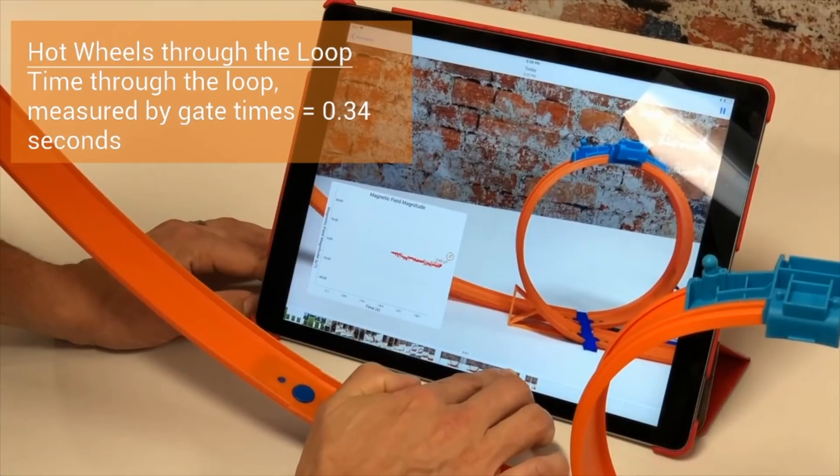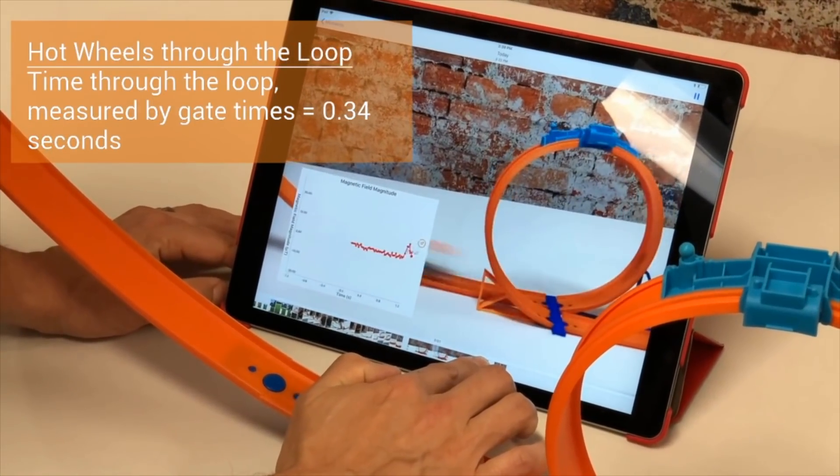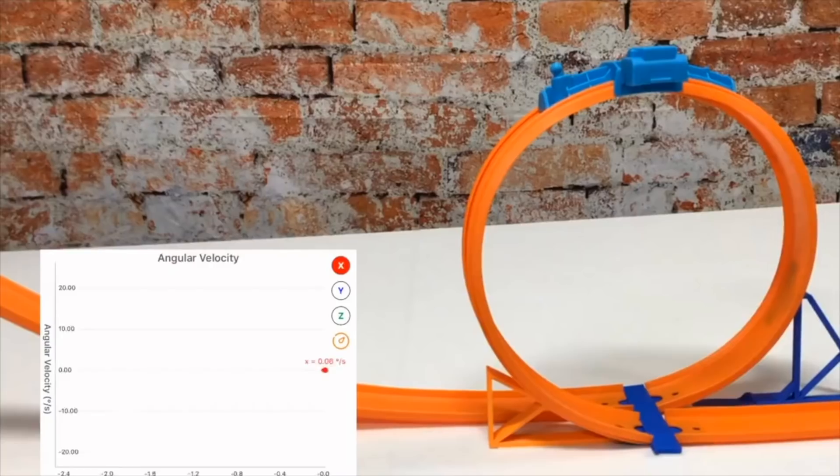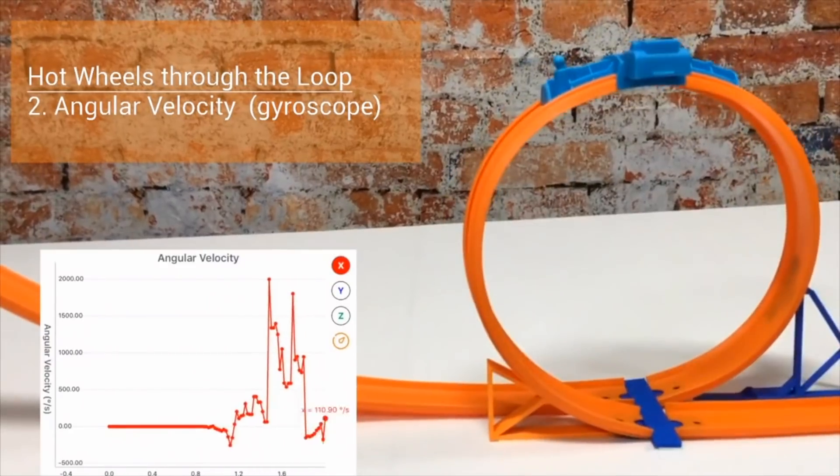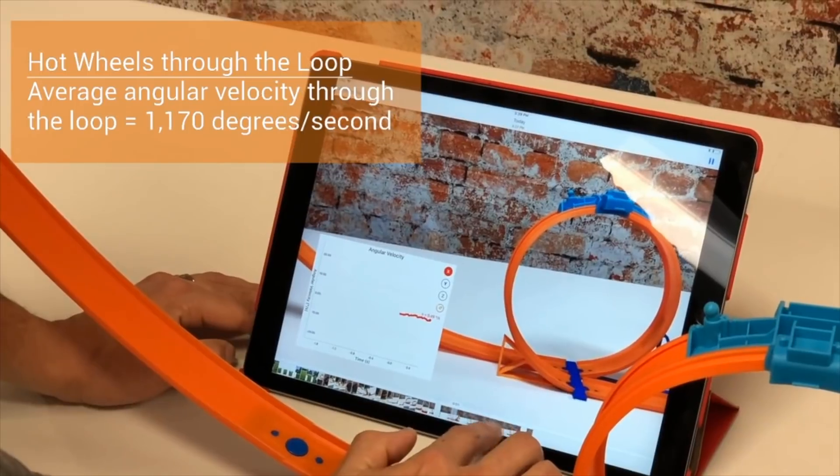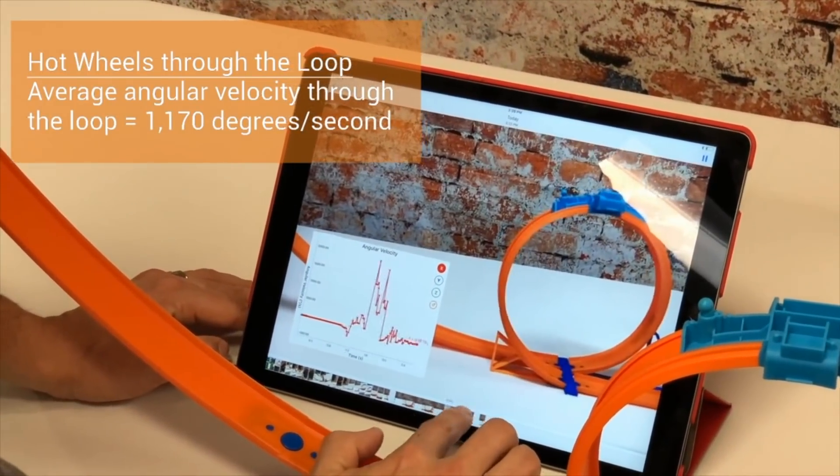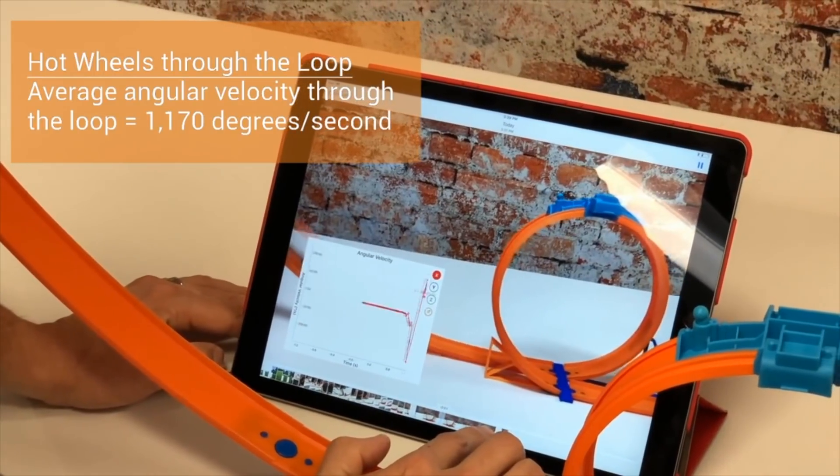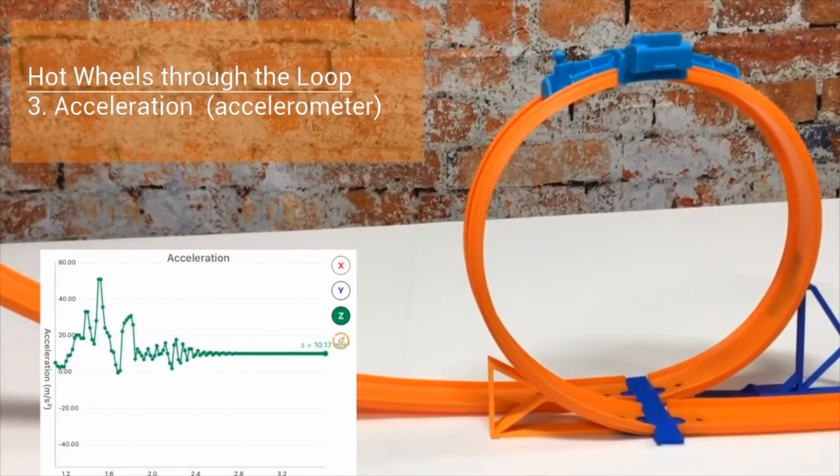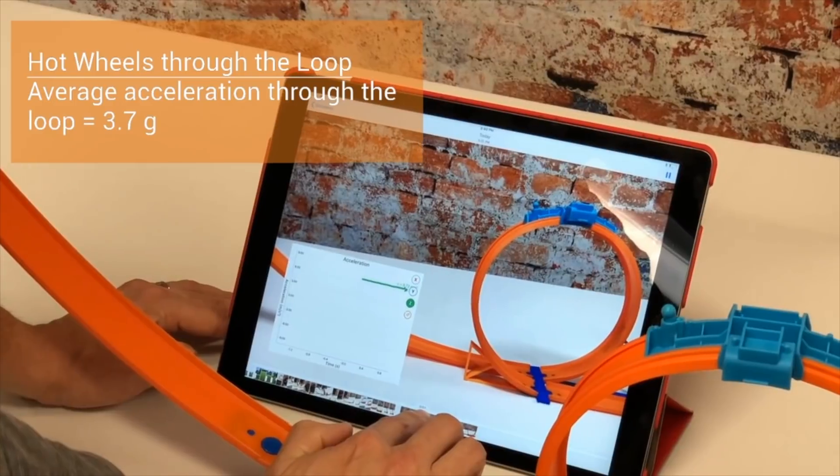Here we're measuring the gate times using the magnetic field. Here we're measuring the angular velocity using the gyroscope. Here we're measuring the acceleration or the g-forces felt using the accelerometer.